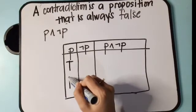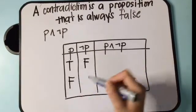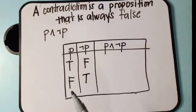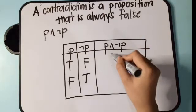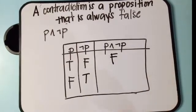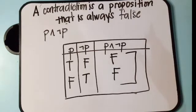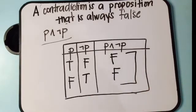We have true and false for P. The negation of true is false; the negation of false is true. Checking the truth table for conjunction: if the first proposition is true and the second is false, the truth value is false. If the first is false and the second is true, the truth value is false again. All answers are false — therefore, this proposition is a contradiction.